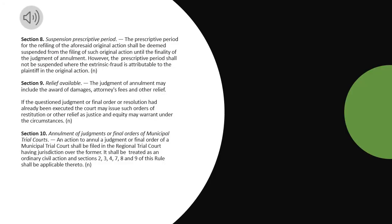Section 8, Suspension of Prescriptive Period. The prescriptive period for the refiling of the aforesaid original action shall be deemed suspended from the filing of such original action until the finality of the judgment of annulment. However, the prescriptive period shall not be suspended where the extrinsic fraud is attributable to the plaintiff in the original action.